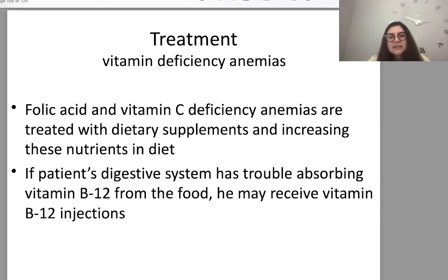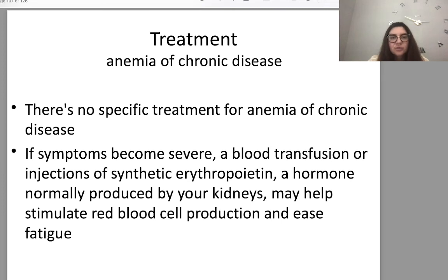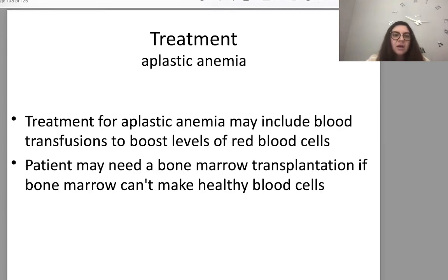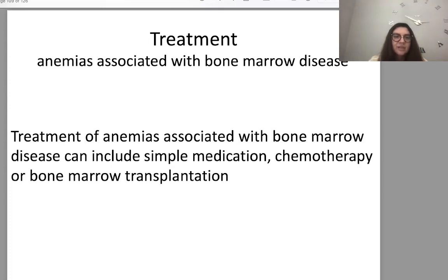Folic acid and vitamin C deficiency anemias are treated with dietary supplements and increasing nutrients in the diet. If digestive symptoms trouble absorption of vitamin B12, injections may be required. There is no specific treatment for anemia of chronic disease; if symptoms become severe, blood transfusion or injections of synthetic erythropoietin may help stimulate red blood cell production and ease fatigue. Treatment for aplastic anemia may include blood transfusions to boost red blood cell levels; bone marrow transplantation may be needed if the marrow cannot make healthy blood cells. Treatment of anemia associated with bone marrow disease includes simple medications, chemotherapy, or bone marrow transplantation.